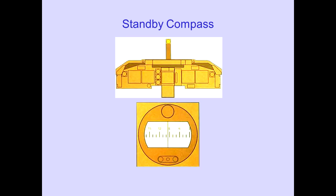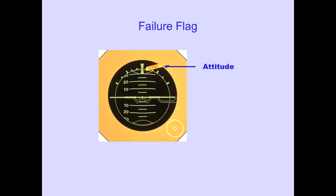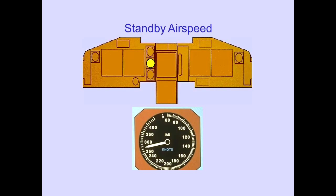The standby compass displays magnetic heading. A self-contained standby attitude indicator, powered by the battery bus, provides attitude information. A failure flag is displayed if the attitude is unreliable. The standby airspeed indicator displays uncorrected airspeed from the auxiliary pitot-1 and alternate static source.